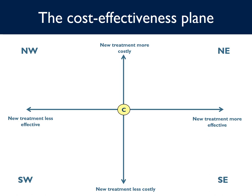Let's look at the Incremental Cost-Effectiveness Ratio, or ICER, and its interpretation using the cost-effectiveness plane. Point C in the center is the starting point — the world with only the existing treatment in place, or the comparator. In an economic evaluation, we estimate where the new treatment is located in the plane relative to the comparator. The x-axis gives its comparative effectiveness, and the y-axis gives its comparative cost. If the new treatment is to the right of the y-axis, it is more effective; if to the left, it is less effective than the comparator. If the new treatment is above the x-axis, it is more costly; if below, it is cheaper than the comparator.